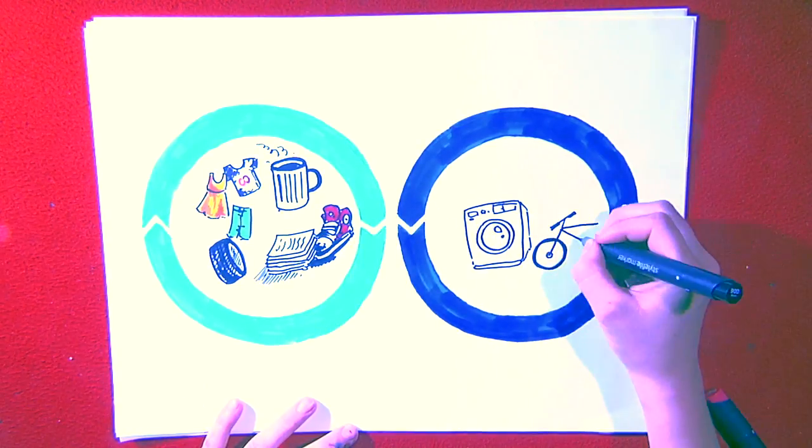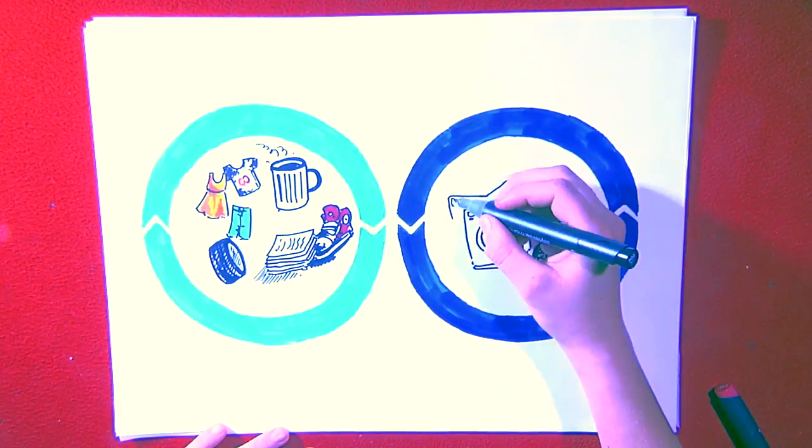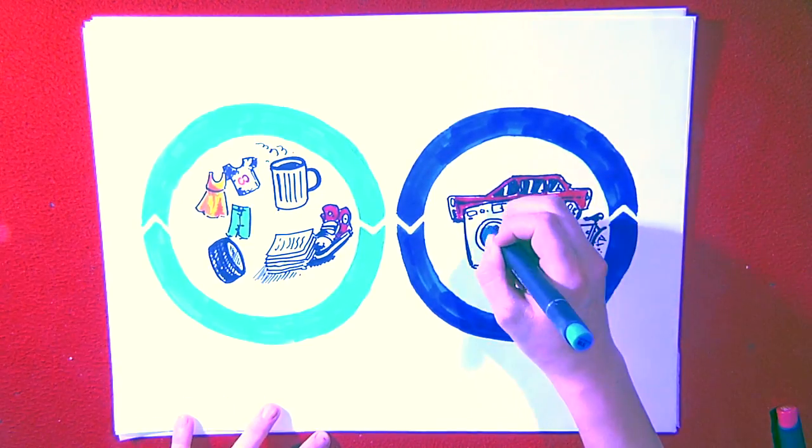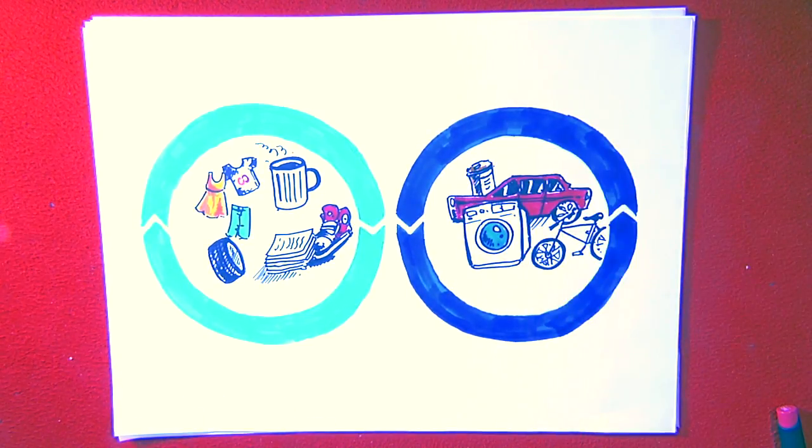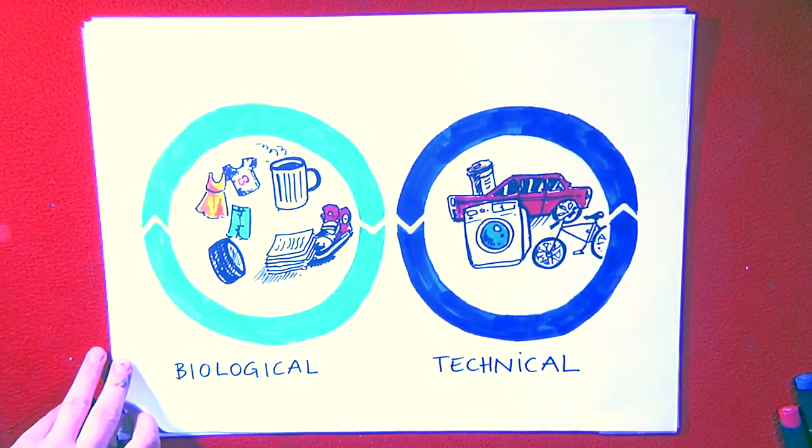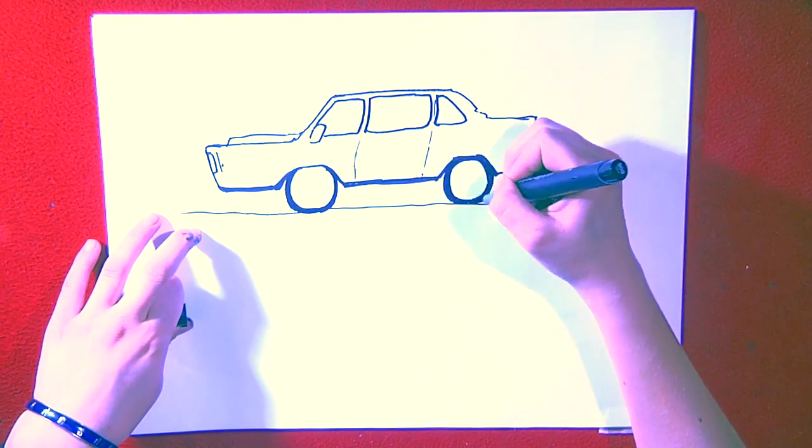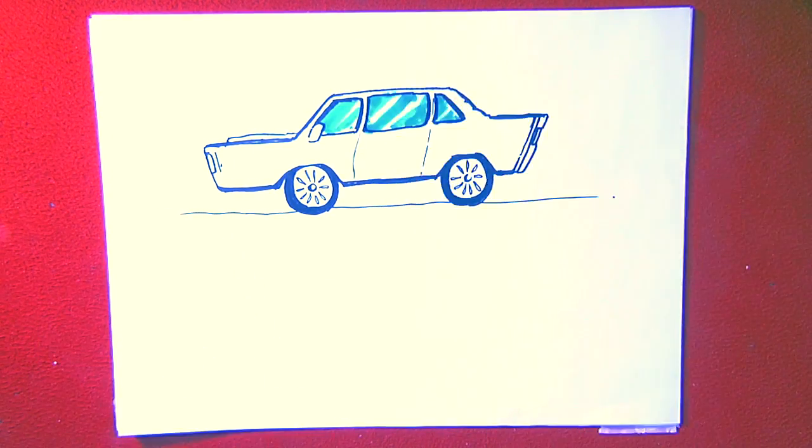In contrast, the technical cycle contains everything that is not biodegradable and should be prevented from entering the environment. A clear distinction between these two cycles is important. So, we have to be able to easily dismantle products into their components.